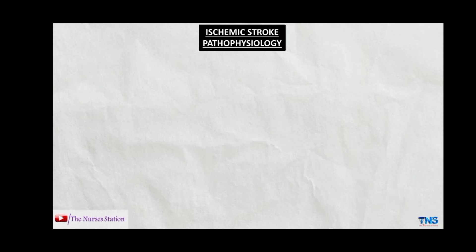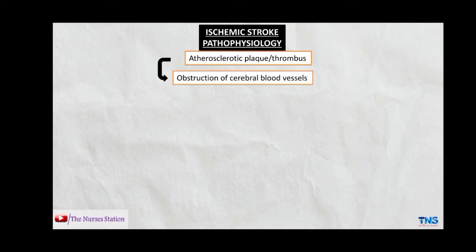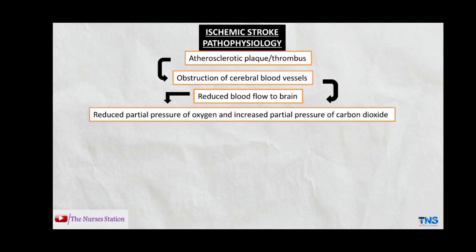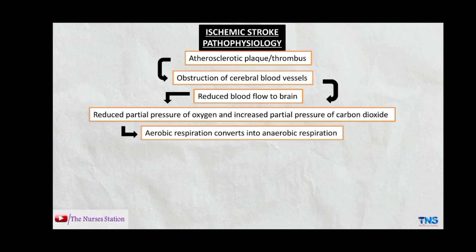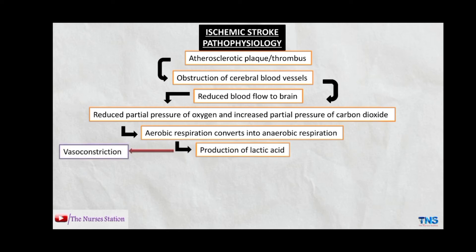The pathophysiology of ischemic stroke begins with obstruction of cerebral blood vessels due to causes like rupture of an atherosclerotic plaque or thrombus. This results in reduced blood flow to the brain, meaning the affected part receives less oxygen, with reduced partial pressure of oxygen and increased partial pressure of carbon dioxide. This causes a shift from aerobic to anaerobic respiration. Anaerobic respiration is less effective and results in the production of lactic acid, which is a vasoconstrictor, further reducing blood flow.